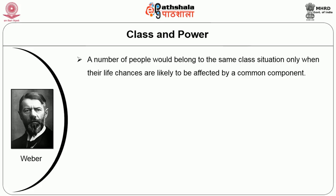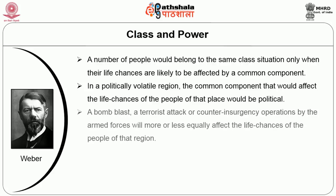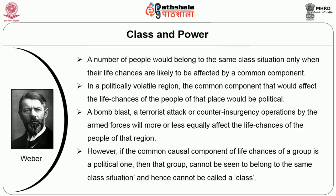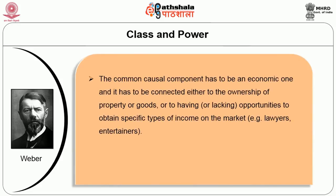A number of people belong to the same class situation only when their life chances are affected by a common component. For example, in a politically volatile region, the common component affecting life chances would be political — a bomb blast or terrorist attack will equally affect people there. However, if the common causal component of life chances is political, the group cannot be seen as belonging to the same class situation and hence cannot be called a class. The common causal component must be economic — connected to ownership of property or goods, or opportunities to obtain specific types of income on the market.